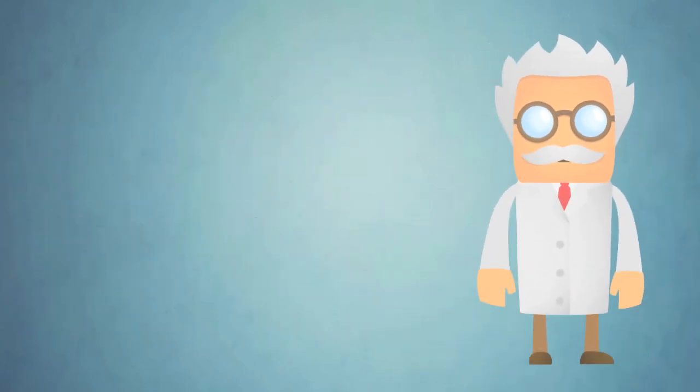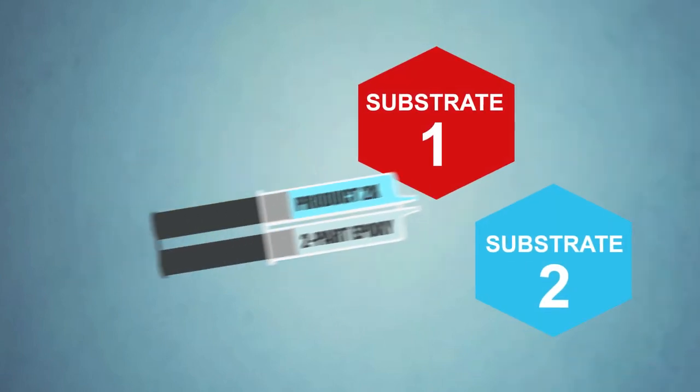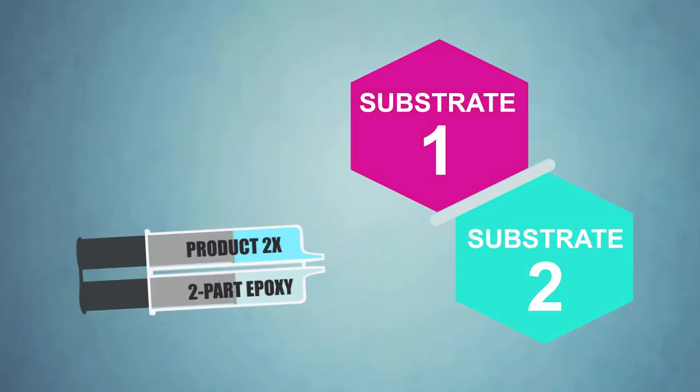Bob, a Master Bond customer, was using a two-part epoxy for bonding dissimilar substrates with different rates of expansion and contraction.